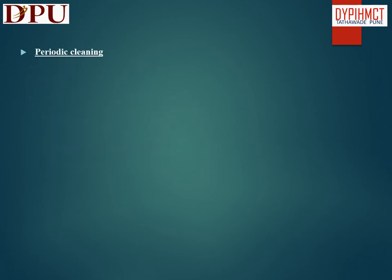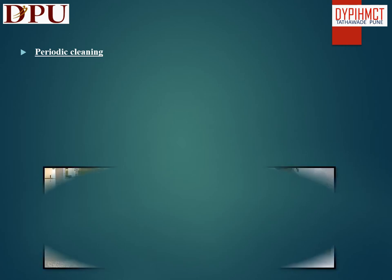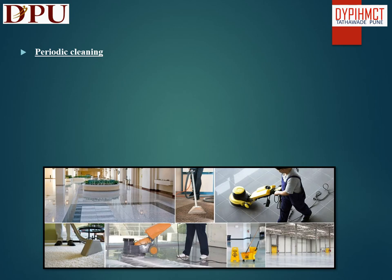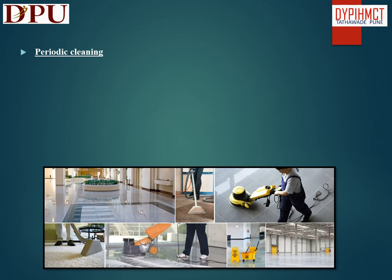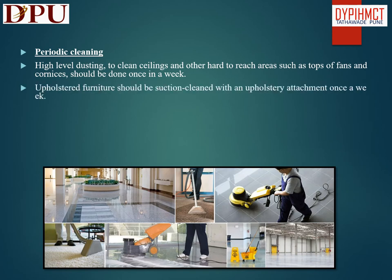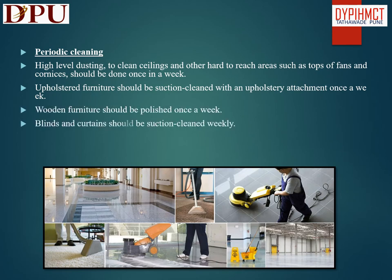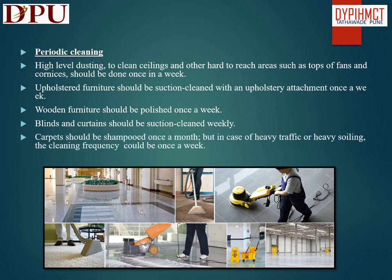In this slide we will discuss about periodic cleaning. Some cleaning tasks need not be carried out daily and should be scheduled on a periodic basis — once in a week, once in a month, once in six months, or once in a year. High-level dusting to clean ceilings and hard-to-reach areas such as tops of fans and cornices should be done once a week. Upholstered furniture should be suction cleaned with an upholstery attachment once a week. Wooden furniture should be polished once a week. Blinds and curtains should be suction cleaned weekly. Carpets should be shampooed once a month, but in case of heavy traffic or heavy soiling, the cleaning frequency could be once a week.